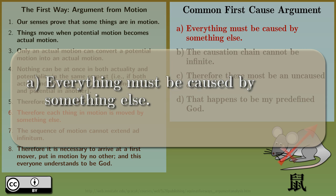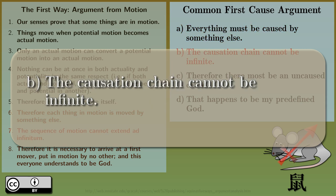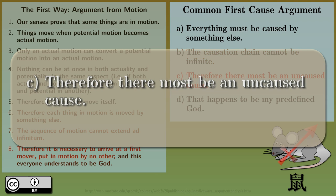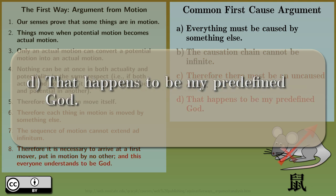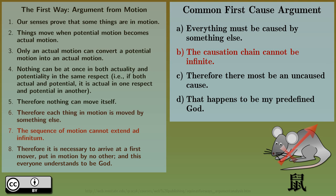Everything must be caused by something else. The causation of change cannot be infinite. Therefore, there must be an uncaused cause. That happens to be my predefined God. The impossibility of infinite causation, or in this specific argument, the infinite sequence of motion, is just waived.